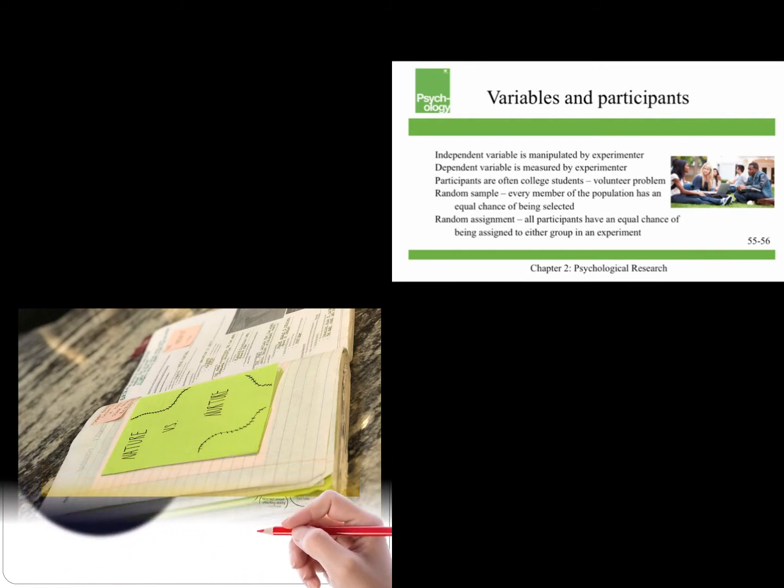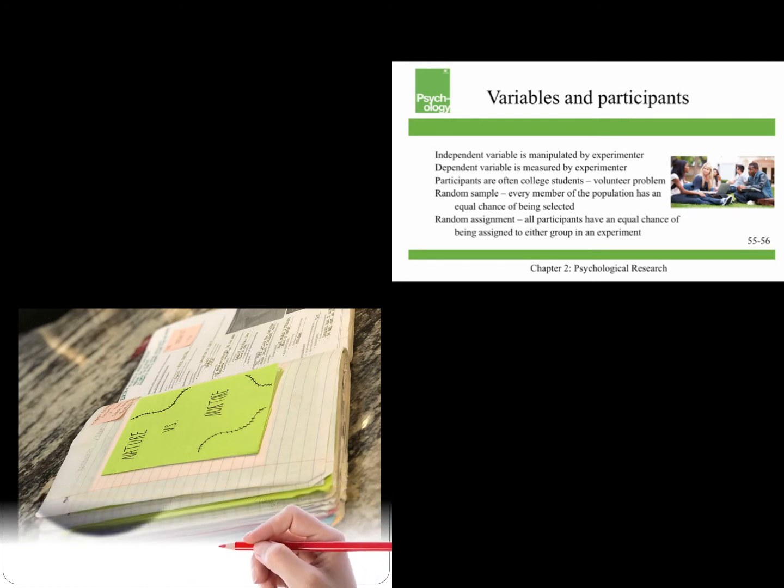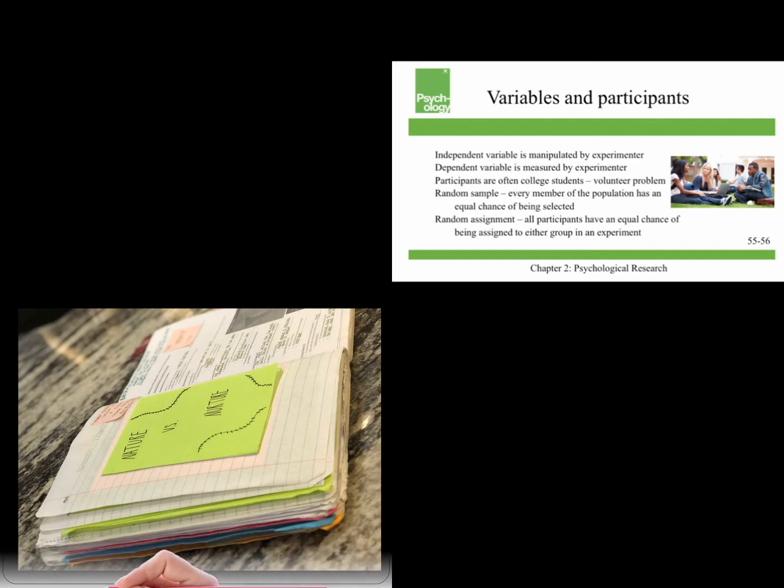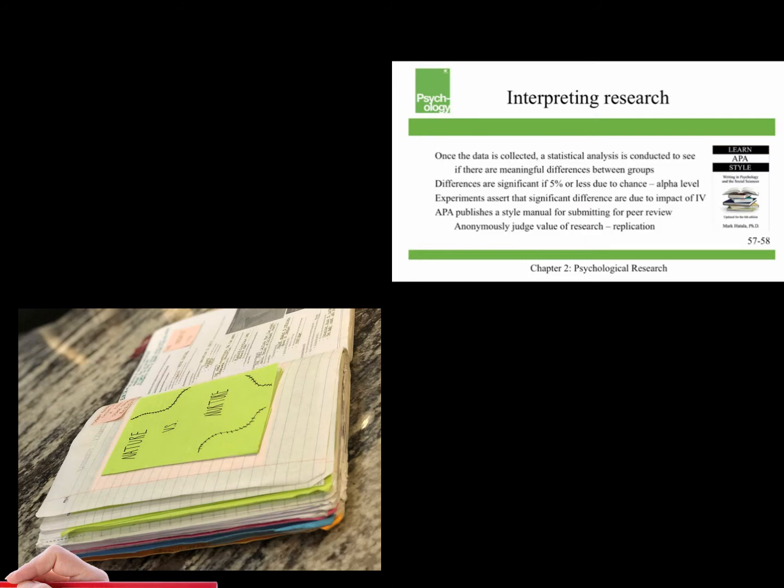Ideally, we like to work from a random sample, and that's when every member of the population has an equal chance of being selected for being in the study, but those really occur only in textbooks. Much more common is random assignment, and this is when all participants have an equal chance of being assigned to either group in an experiment. And that's really critical for sound experimental design.